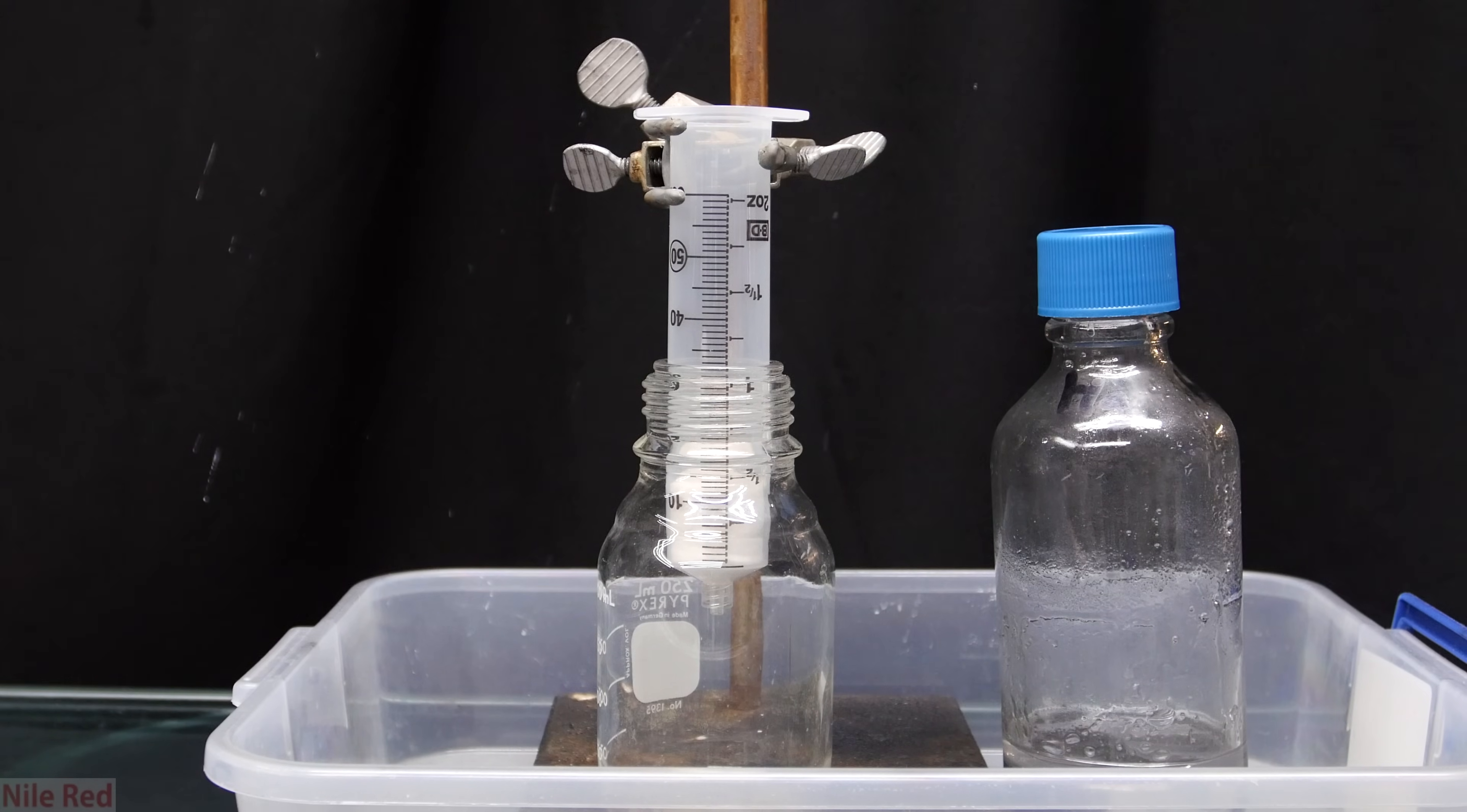I then prepare my filtering setup like you see here. Everything is placed inside a bucket just in case there's any spills or splashes. I highly suggest you do this when you work with mercury because a spill is a huge pain to clean up. Also the syringe is placed inside the bottle so no mercury can splash out.